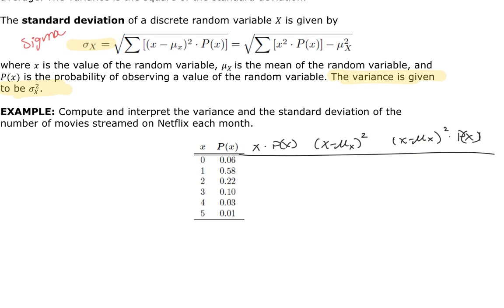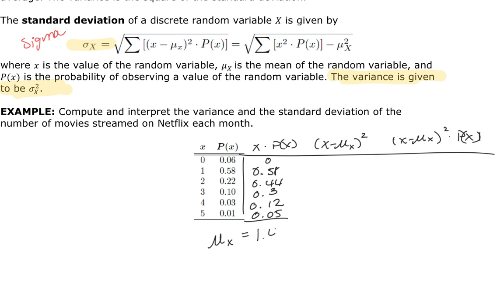We already did the x times P(x) above, so I'll just write them down again: the first was 0, then 0.58, 0.44, 0.03, 0.12, and 0.05. We found the mean mu sub x to be 1.49.